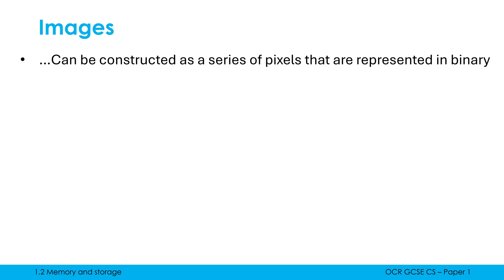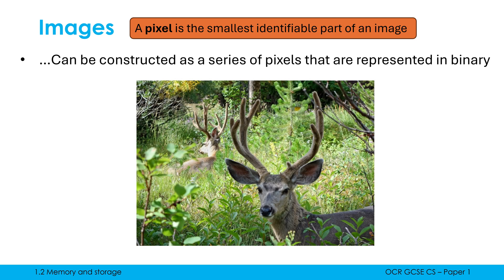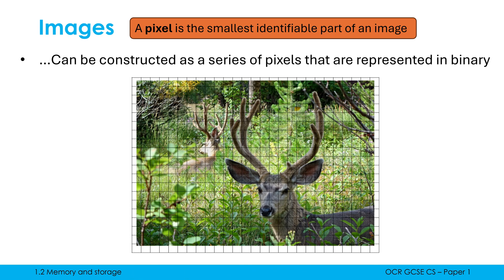A pixel is the smallest identifiable part of an image. We can't zoom in any further — we can't go into a pixel, it's just a block of color. So we've got an image like this, a bitmap image that most likely has millions of pixels. If I went in very very close, as I'm sure all of you have done at some point, we can see the individual squares — because a pixel is a square and consists of a single color.